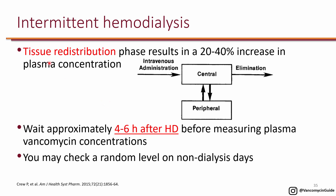Because of the tissue redistribution phase, there is a 20 to 40 percent increase in plasma concentration. When vancomycin is administered, a good portion goes into peripheral tissue, and the level we measure is from the central compartment — the circulation. When hemodialysis is complete, it is basically removing vancomycin from the central compartment. So immediately after completion of hemodialysis, if you get the level, it reflects only the central compartment blood level, which might be low.